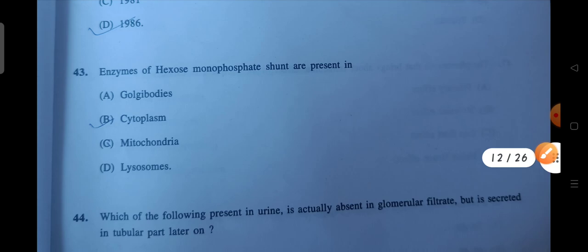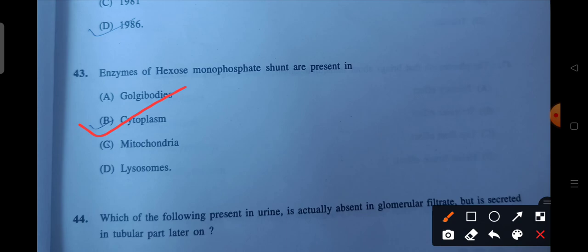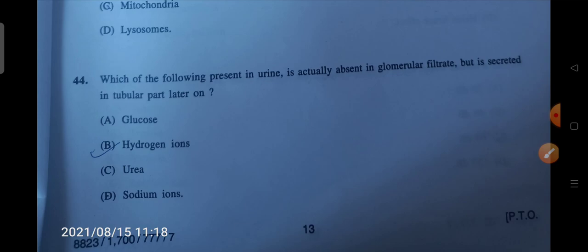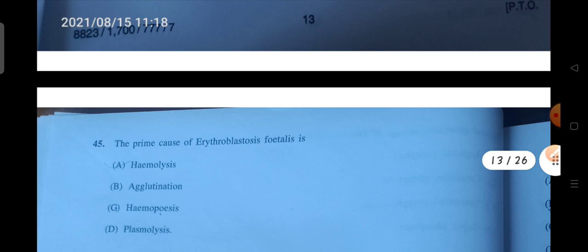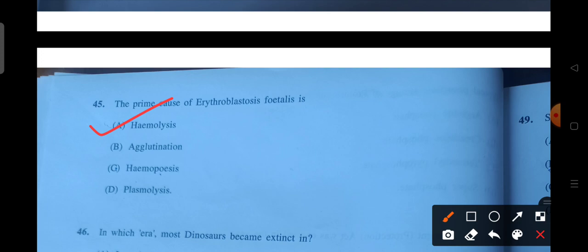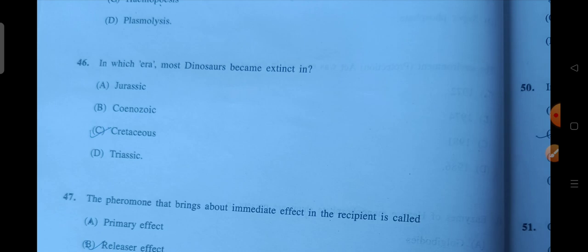Next is enzymes of hexose monophosphate shunt are present in. So where are they present? They are present in cytoplasm. Next question: which of the following present in urine is actually absent in glomerular filtrate but is secreted in the tubular part later on? That is your hydrogen ions. Next is the prime cause of erythroblastosis is. So what is the prime cause? That is your hemolysis. Next is in which era did most of the dinosaurs become extinct? So C will be the correct answer.